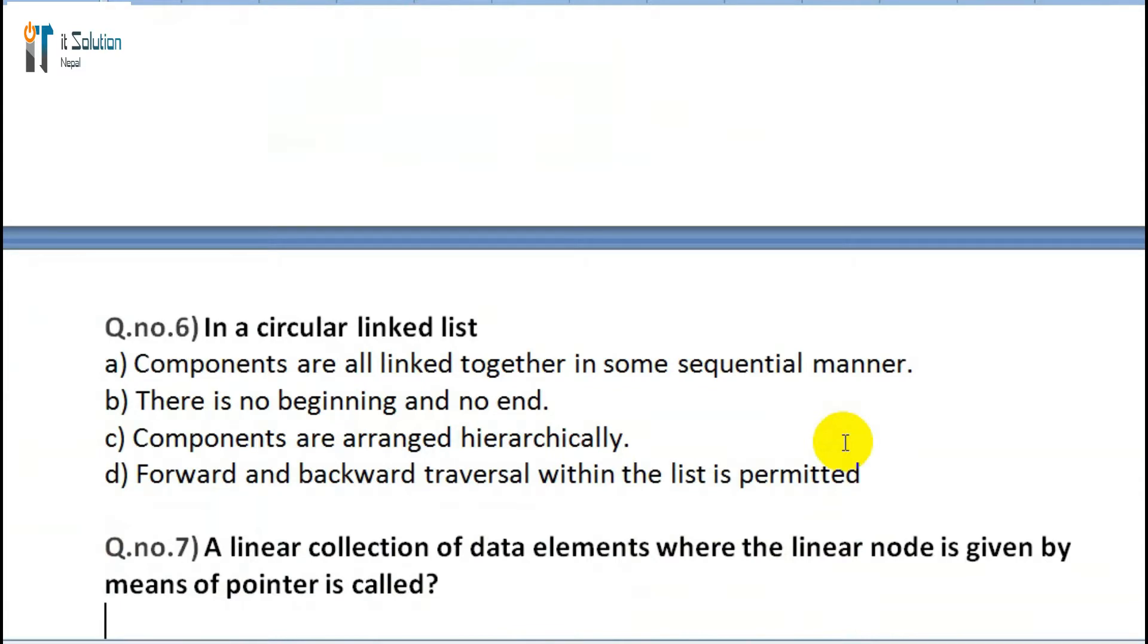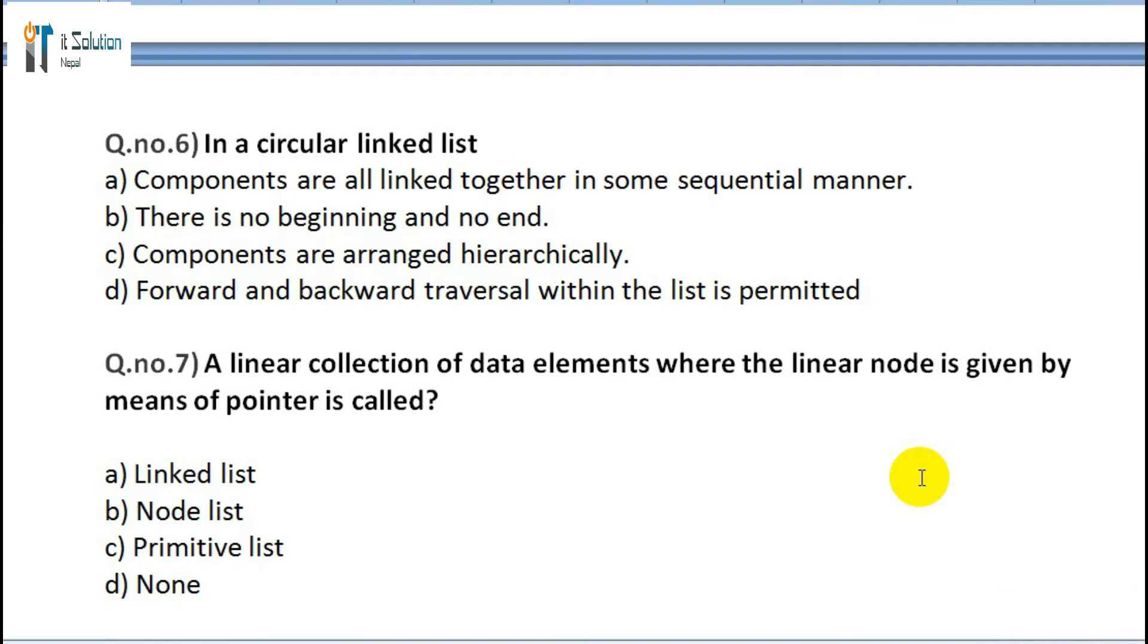Question 6: In a circular linked list: A) Components are all linked together in some sequential manner, B) There is no beginning and no end, C) Components are arranged hierarchically, D) Forward and backward traversal within the list is permitted. Question 7: A linear collection of data elements where the linear node is given by means of pointers is called: A) Linked list, B) Node list, C) Primitive list, D) Non-primitive list.